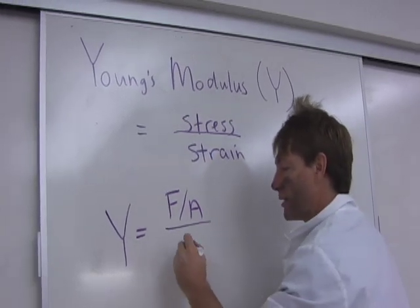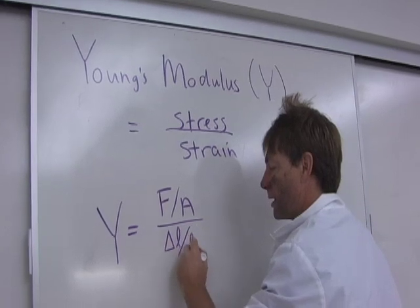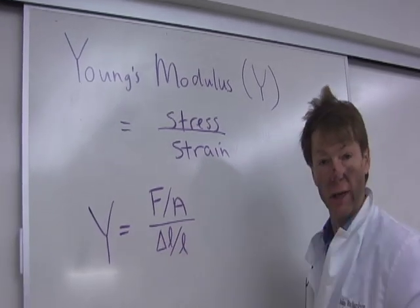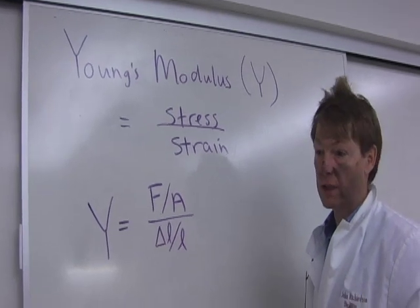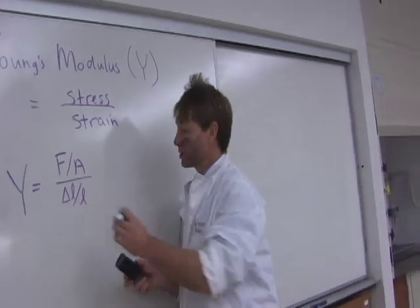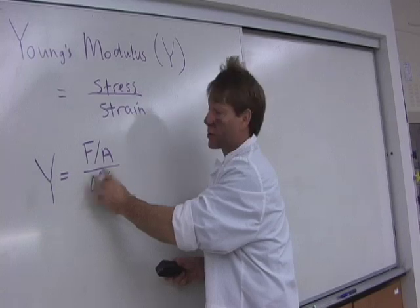The strain is the change in length as a ratio of the change in length to the total length of the object. If it's a meter long and it's got a 5% change, that's going to be a 5 centimeter stretch or compression or twist.